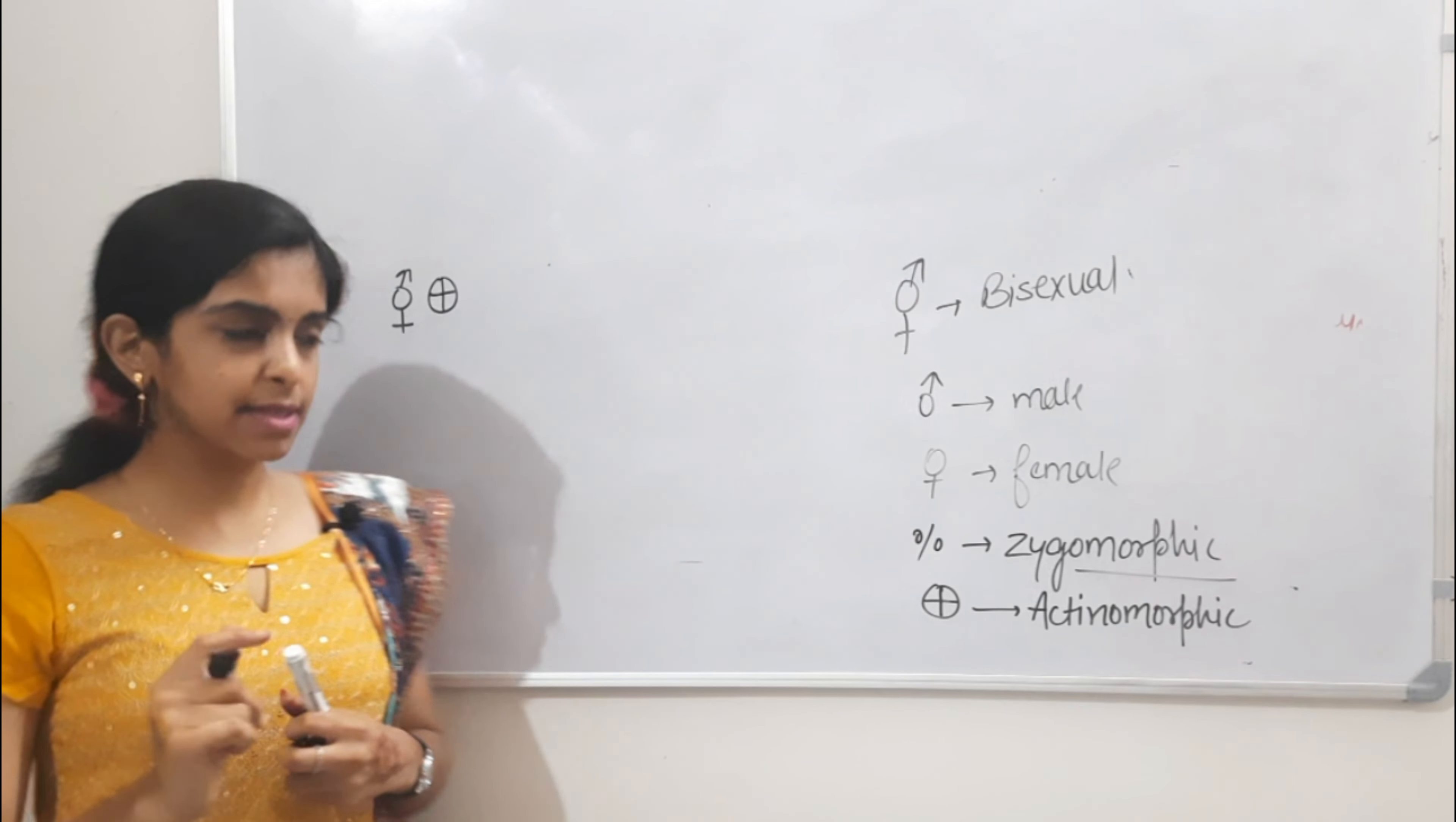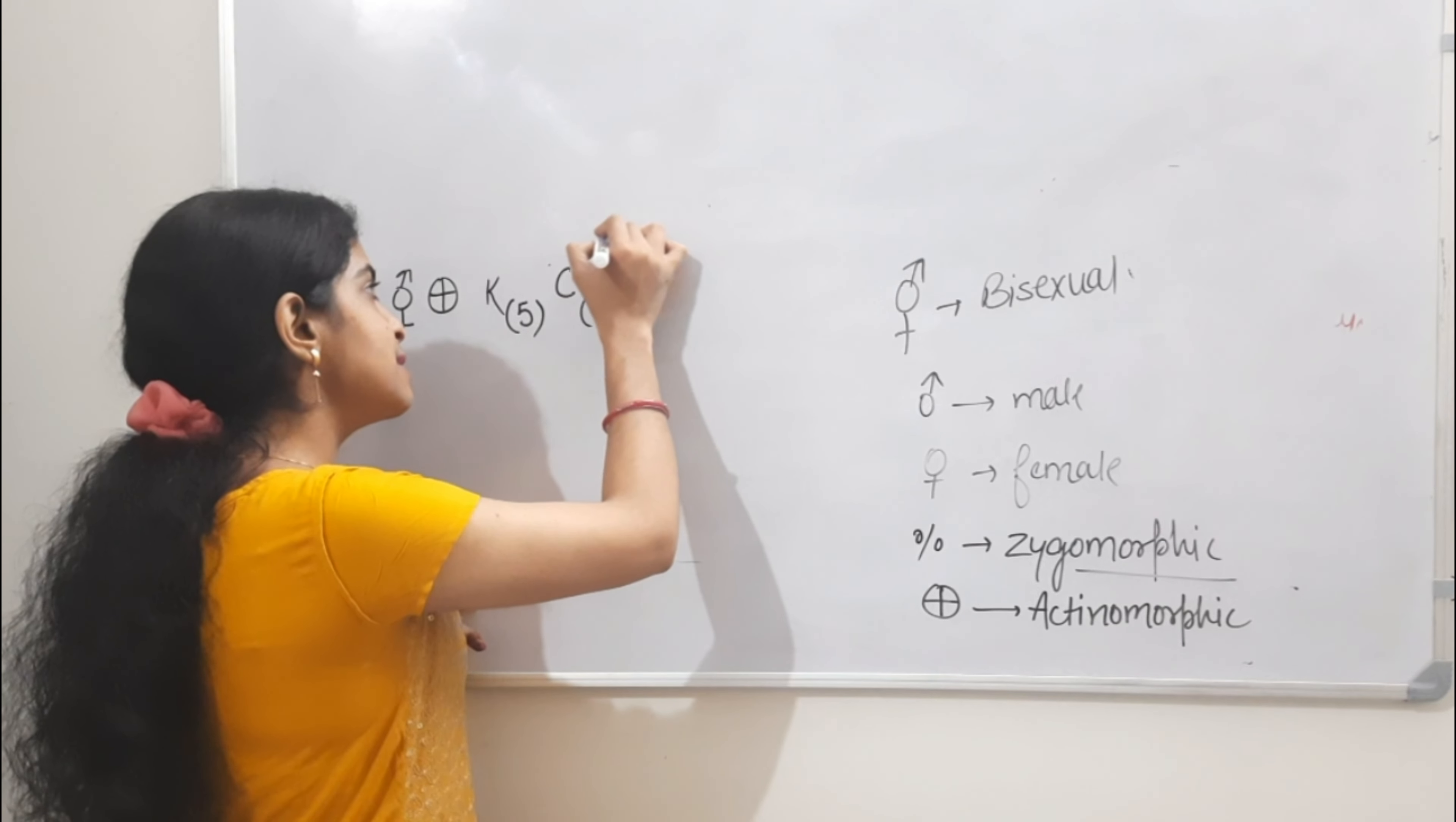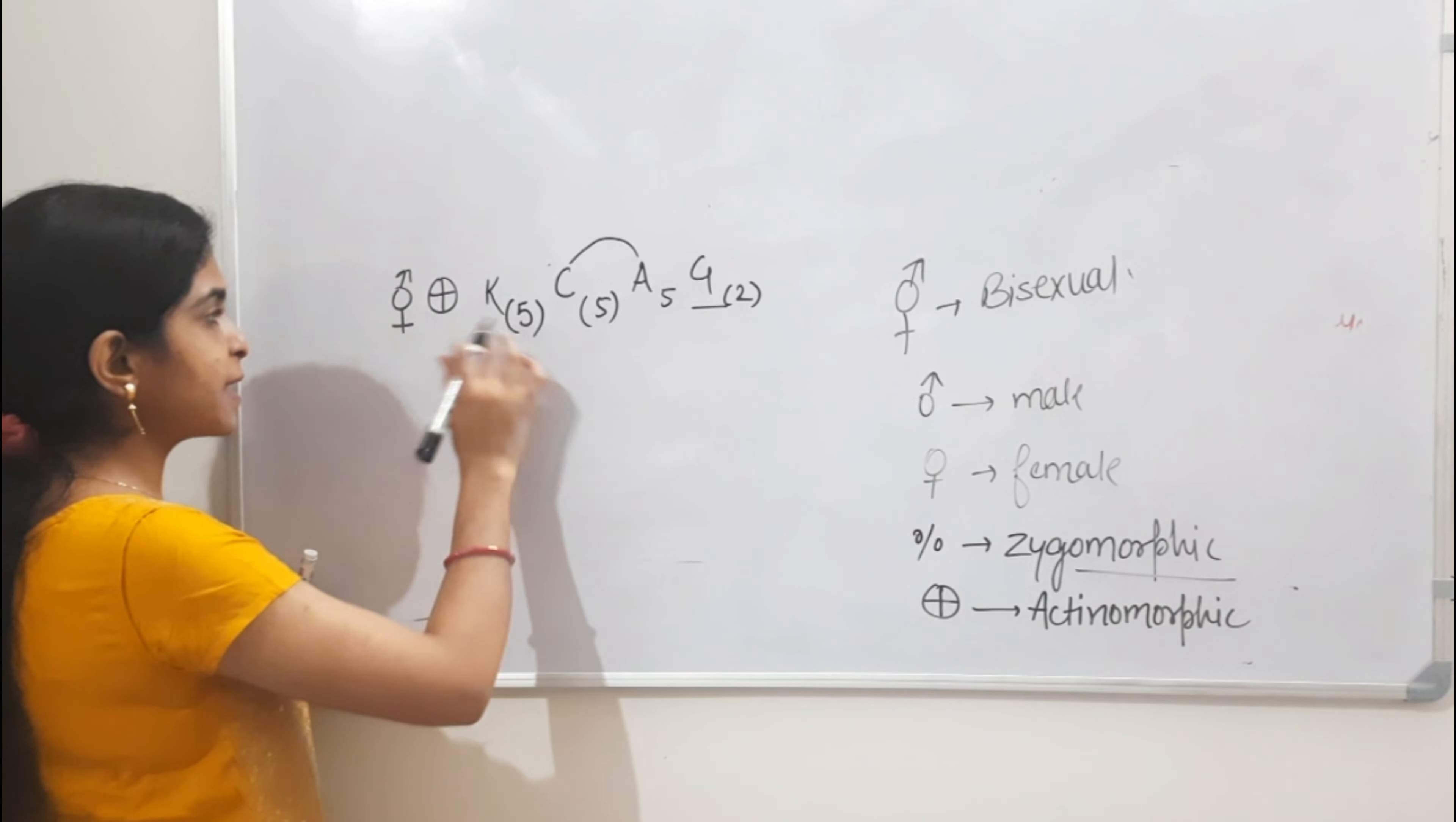Next, the calyx is five and united. United we always write in brackets. Then corolla is five and united. Androecium is five and epipetalous - epipetalous means attached to petals. Then gynosium is bicarpellary, we write in brackets, and syncarpous. Superior ovary with axile placentation. The floral formula is written with symbols for each part - androecium and gynosium bicarpellary.